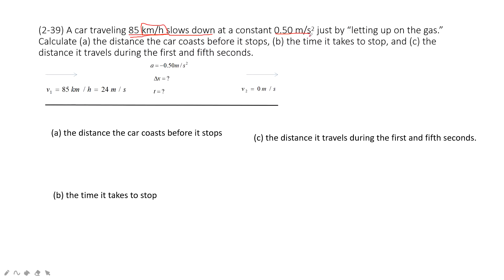And then calculate the distance the car coasts before it stops. Before it stops, this tells us the final velocity is zero. Initial velocity tells you, final velocity tells you, asks you to find the distance or displacement. Because this car moves in a straight line, the distance is just the displacement.